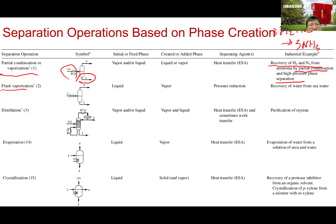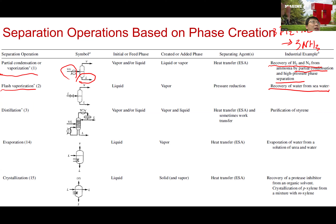Another example is flash vaporization, mostly used for recovery of water from seawater. Many territories and countries on this planet do not have fresh water — a notable example is countries in the Middle East. Although they are surrounded by the ocean, they do not have access to fresh water. In flash vaporization, you pump seawater into a reactor, reduce the pressure, and water will evaporate. You produce water vapor from seawater, and that water vapor can be sent to a condenser to get fresh water.